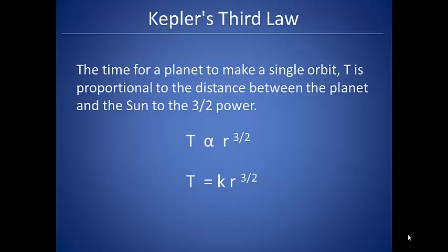Now it's all about the math. Kepler analyzed an enormous amount of data, and he was able to mathematically describe a planet's orbit. He came up with his third law that says the time for a planet to make a single orbit, T, is proportional to the distance between the planet and the sun to the 3/2 power.